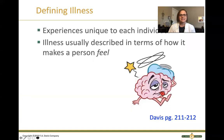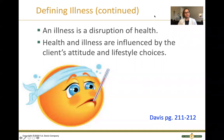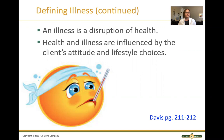Illness, on the other hand, is unique to each individual in terms of what they consider illness, and it's usually described in terms of how it makes a person feel. Illness is a disruption of health, or some say the opposite of health. Health and illness are often influenced by a client's attitude and lifestyle choices — some aspects of illness are outside our control, while others are definitely based on individual choices and attitude about one's own health and well-being.